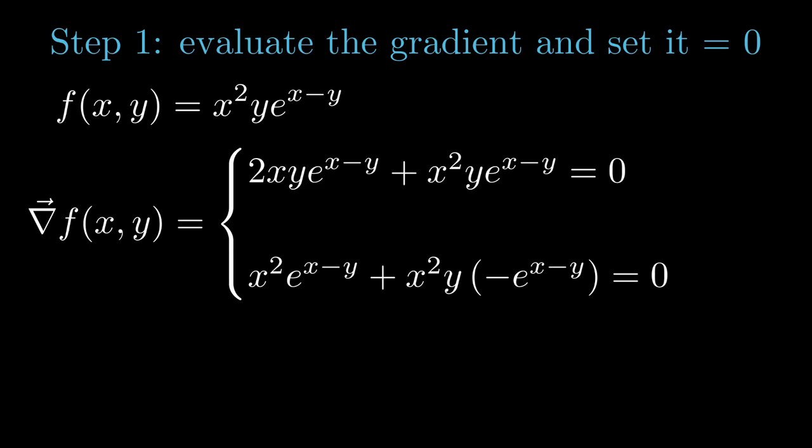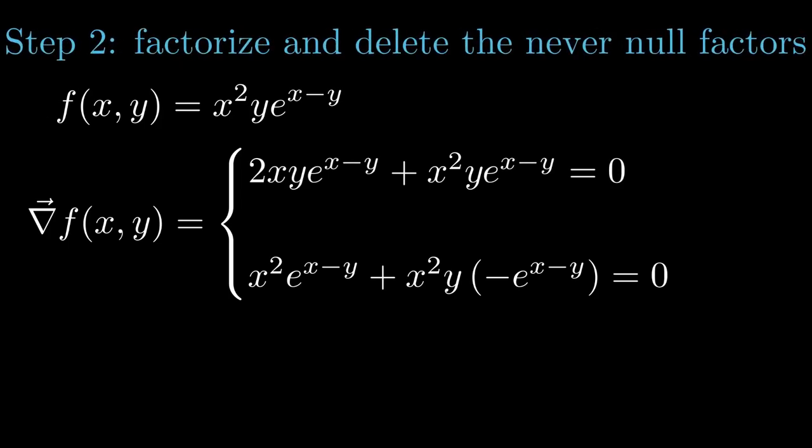So, now that we have created this system, how do we solve it? Well, step two says factorize and cancel the never null factors. In our case, we factorize and delete the exponential, which is an always positive function.